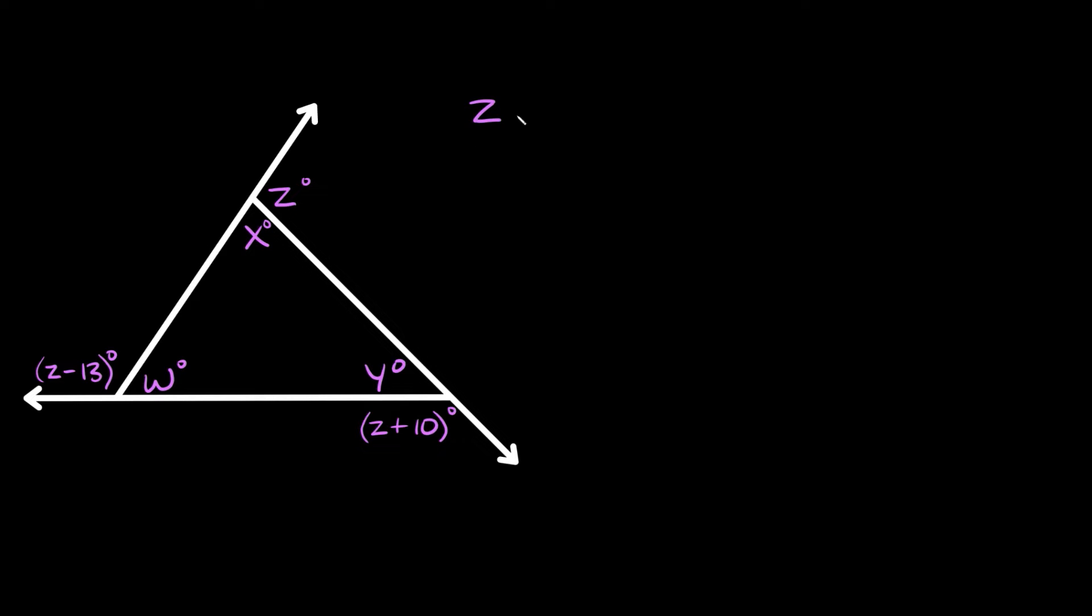So we have z plus z minus 13 in parentheses and then plus z plus 10. And again that's equal to 360. Now since we have all the same variables over here we can actually just drop them since we're just adding and subtracting here. So we could just say z plus z minus 13 plus z plus 10 is equal to 360.